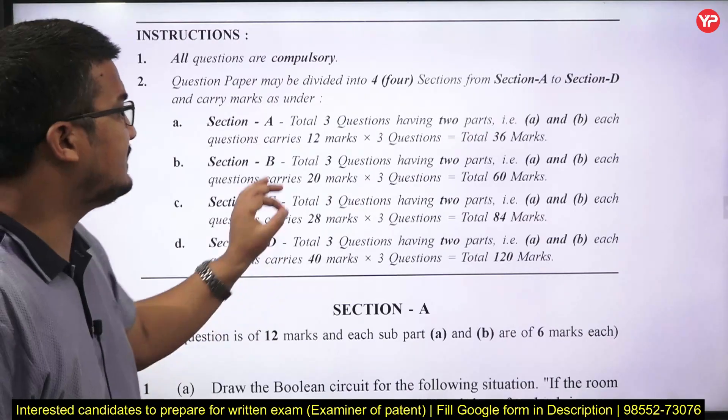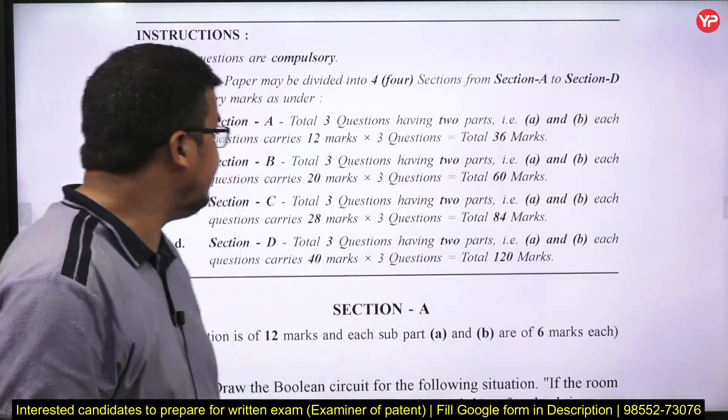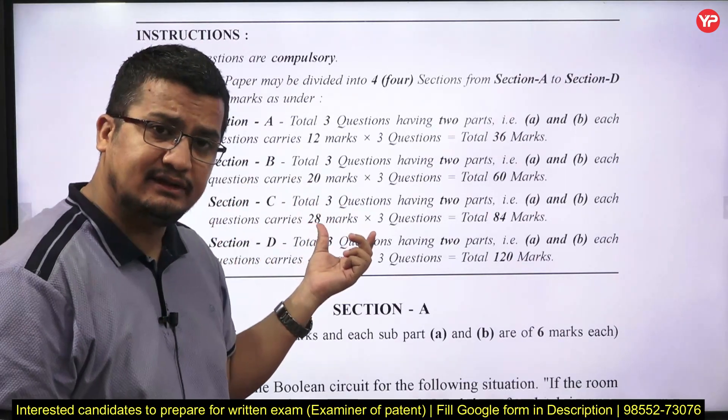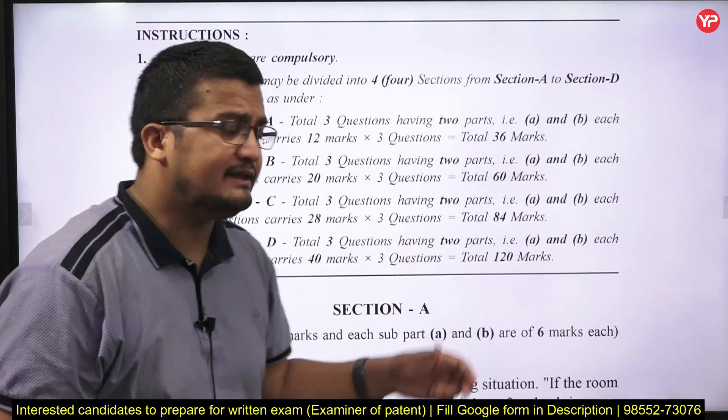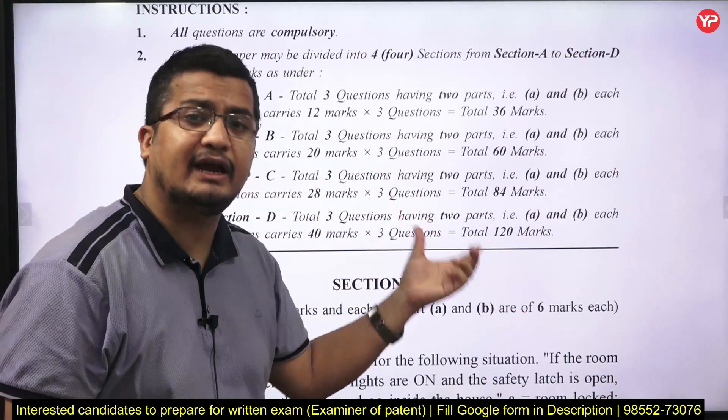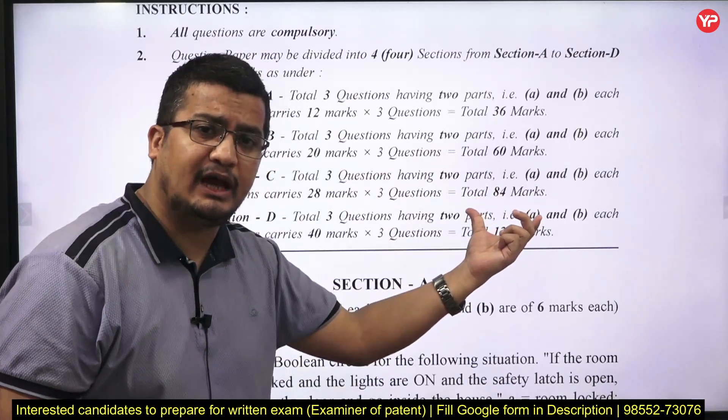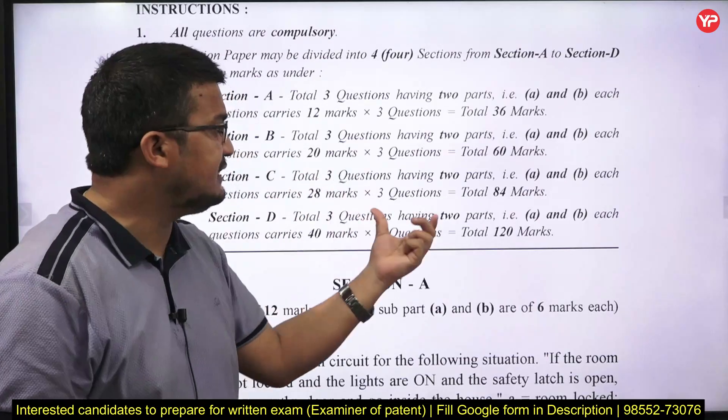And section B, total 3 questions will be there and again there will be 2 parts and each question will carry 20 marks. So again 3 questions 20 marks individual, total 60 marks. There is section C, total 3 questions will be there. Again the structure is same, 2 parts it will be having and each question carries 28 marks. So 28 into 3, 84 marks.